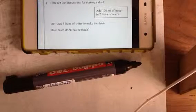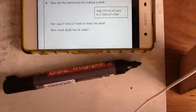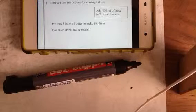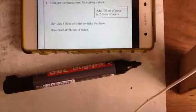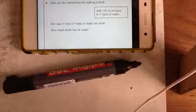Here are the instructions for making a drink: add 100ml of juice to 2L of water. Dev uses 5L of water to make a drink. How much drink has he made?